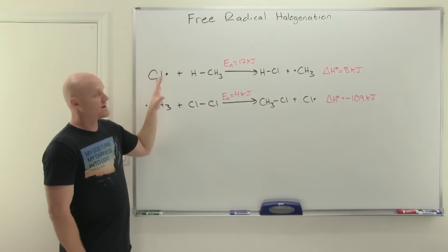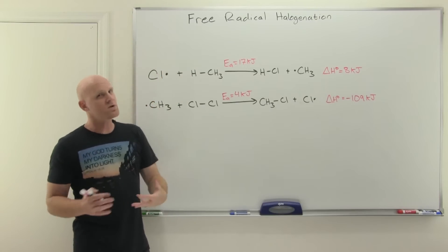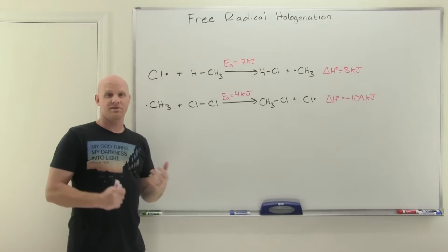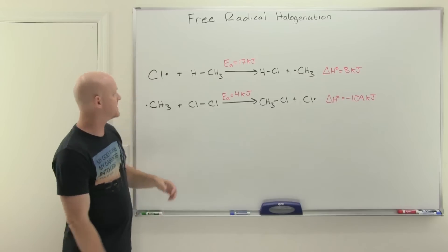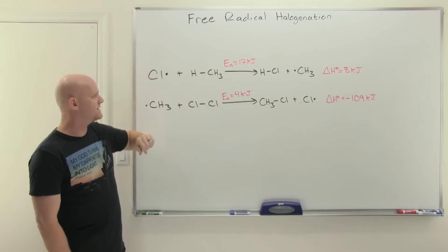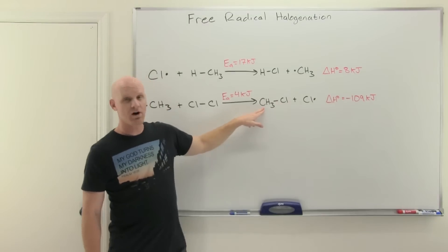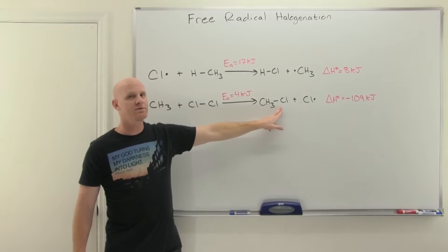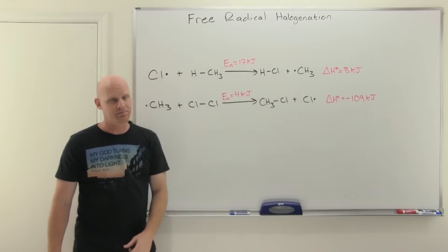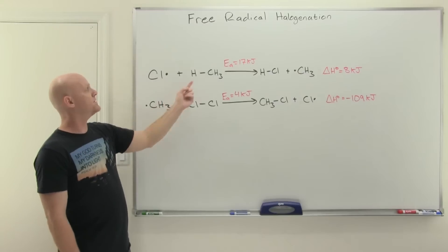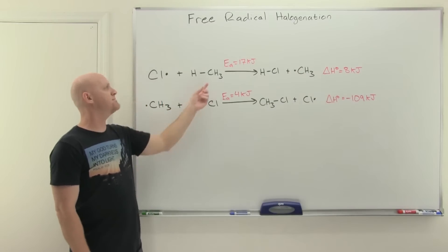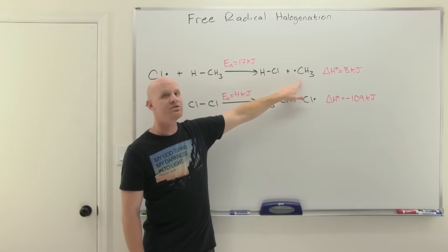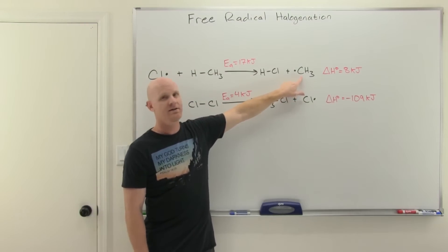I'm only showing two of the steps - we're going to add more steps to this in a way - but these are the two most important steps because this is where the product is formed. In this case, we're going to do chlorination of methane, putting a chlorine on the only carbon we have, replacing a hydrogen. It's a substitution reaction. A chlorine radical comes in and abstracts a hydrogen from methane, forming a new bond to that hydrogen, causing the C-H bond to break, leaving us with a methyl radical - a carbon radical formed in that first step.